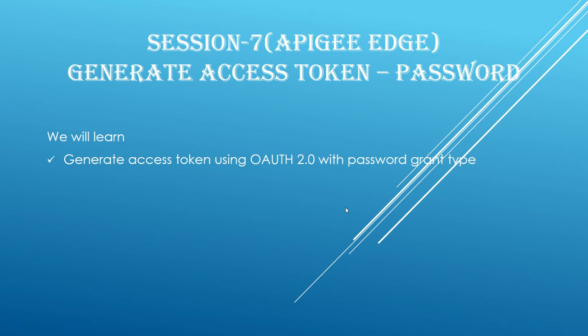As we know, grant type is the mandatory field which we must pass with the request in order to generate an access token. In session 3 of our course we discussed what a grant type is and what the most commonly used ones are. If you haven't watched it, I would strongly recommend you watch it before proceeding. I have provided the links in the description below.